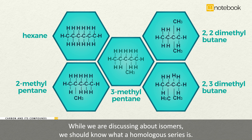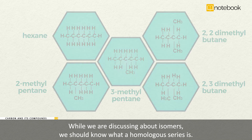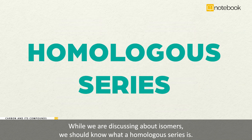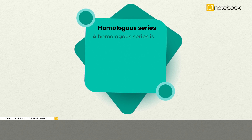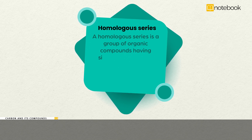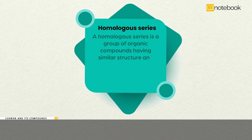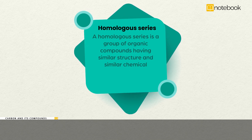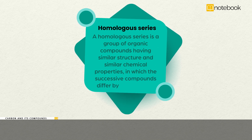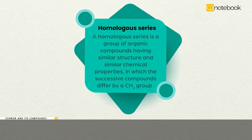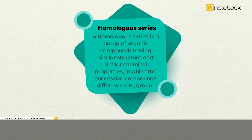While we are discussing about isomers, we should know what a homologous series is. A homologous series is a group of organic compounds having similar structure and similar chemical properties in which the successive compounds differ by a CH2 group.